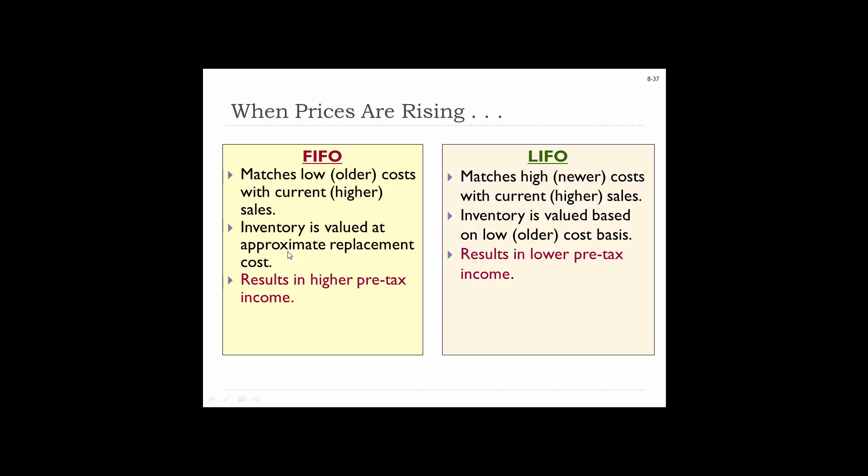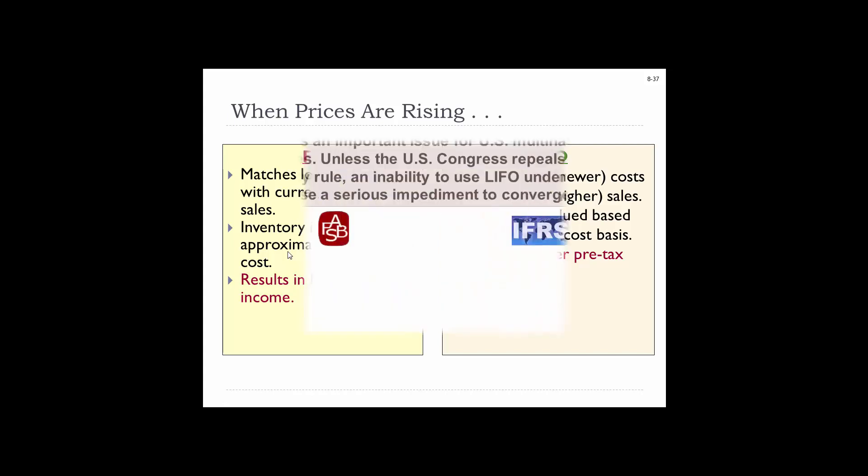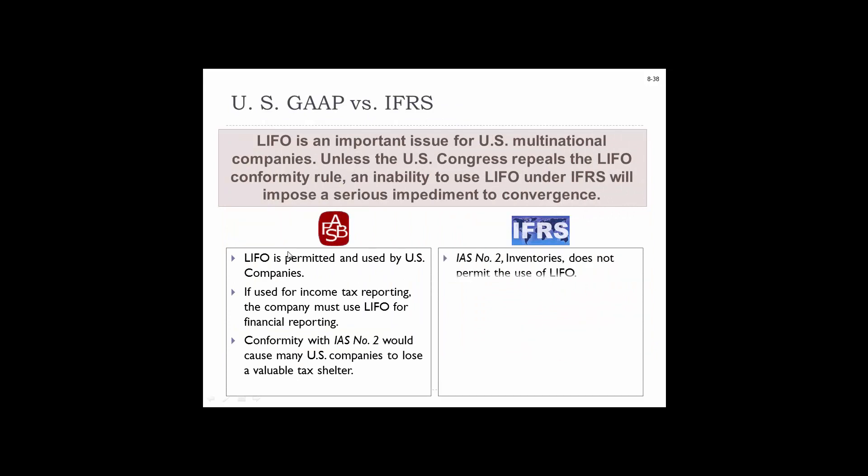When prices are rising, FIFO matches older costs with current higher sales, and inventory is valued at approximate replacement costs. FIFO results in higher pre-tax income when prices are rising. LIFO matches newer costs with current higher sales, and inventory is valued on a lower, older cost basis, resulting in lower pre-tax income. LIFO is an important issue for U.S. multinational companies — LIFO is permitted under U.S. GAAP but not under international standards (IFRS). Therefore a multinational company would only use LIFO for domestic inventory.